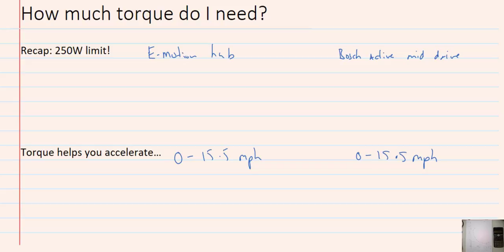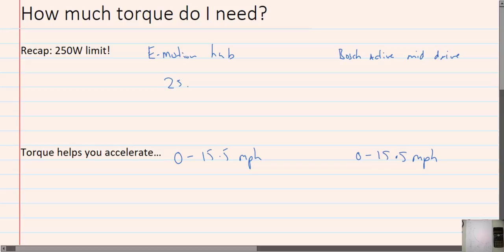So most manufacturers differentiate their products based on how much torque. The lowest you can get is this E-Motion hub drive. It puts out 25 Nm at the hub. The Bosch Active Line, 40 Nm at the crank.